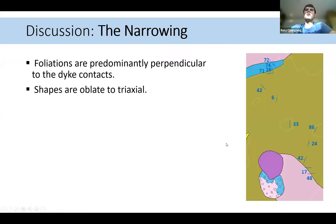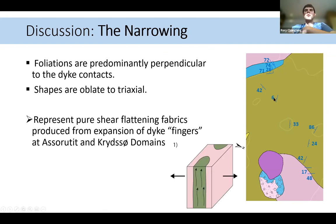If we now break up this area and talk through each of the component parts, if we look at the narrowing here, which is between the Assortutit domain, which is up towards the northeast in this area, and then the Krineds to neighboring domain to the southwest, the foliations are predominantly perpendicular to the dike contacts, as I mentioned before, and the shapes are oblate triaxial. I propose this may represent a pure shear flattening fabric produced as these dike fingers expand and sort of merge into one another between these two domains.